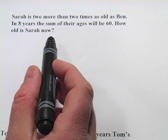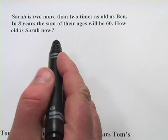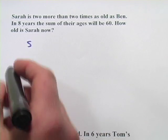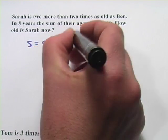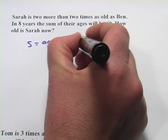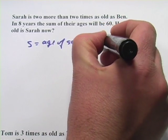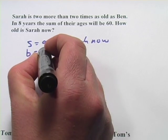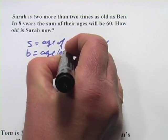It says Sarah is two more than two times as old as Ben. So first of all, let's define our variables. S is going to be the age of Sarah, and I'm going to specify now, today. And B is going to be age of Ben now.